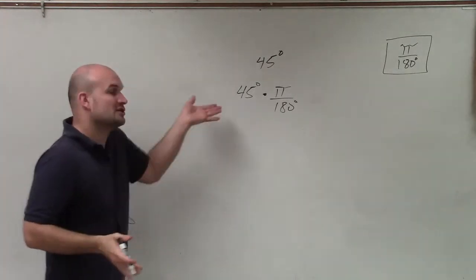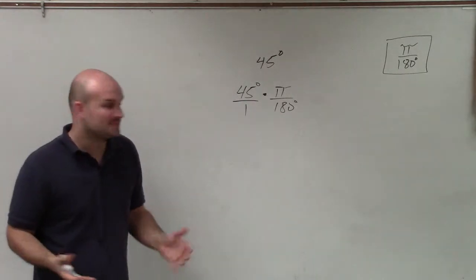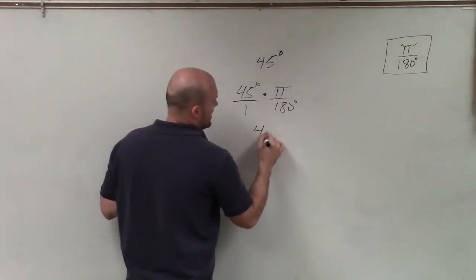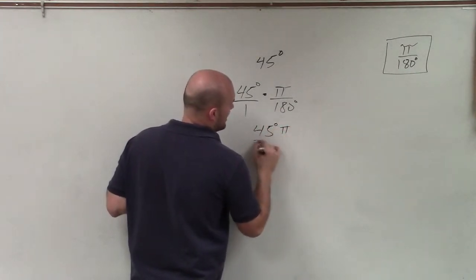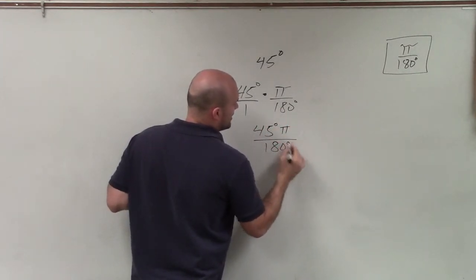Now it's important for us to understand that 45 degrees we can rewrite as a fraction here. And therefore, by combining these, I have 45 degrees over pi divided by 180 degrees.